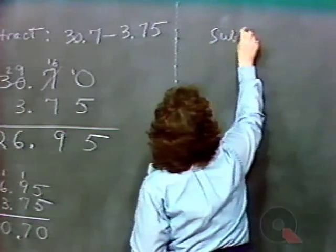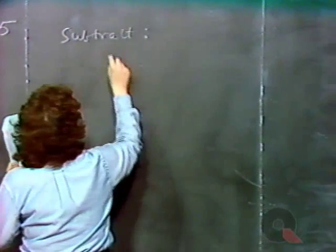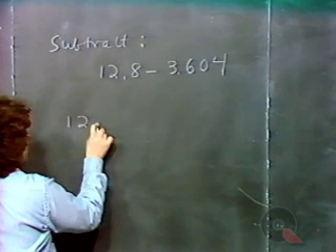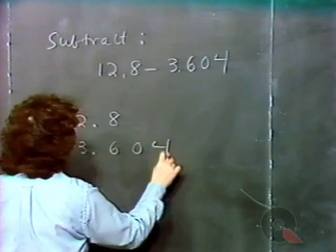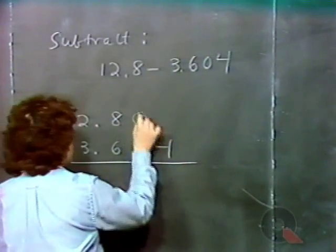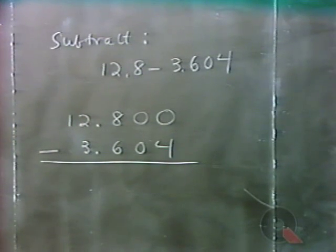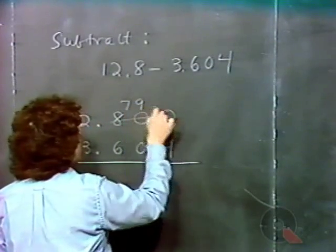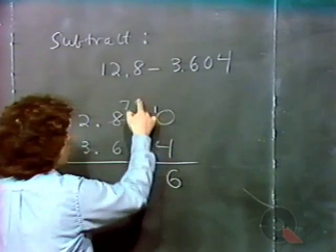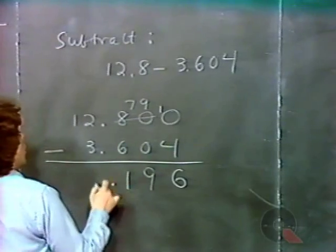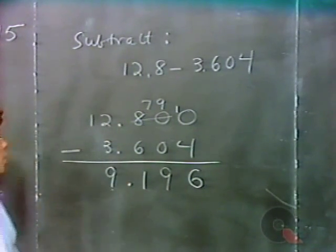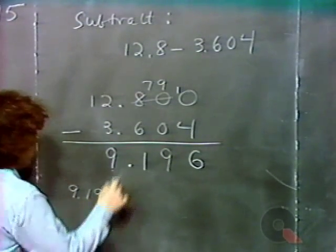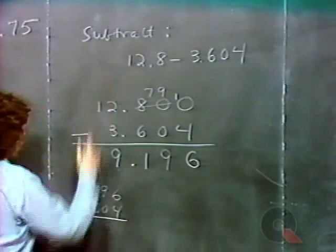Let's do another subtraction: 12.8 minus 3.604. Write 12.8 as 12.800. Can't take 4 from 0 — borrow: the 0 becomes 10, the next digit drops to 9. Ten minus 4 is 6. Nine minus 0 is 9. Can't take 6 from 7 — borrow from 12: it becomes 11, the 7 becomes 17 — wait, working it out: 7 minus 6 is 1. Twelve minus 3 is 9. The answer is 9.196. Check: 9.196 plus 3.604 gives 12.8, which confirms it.